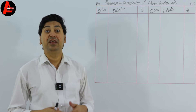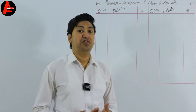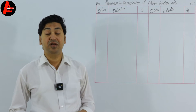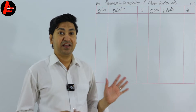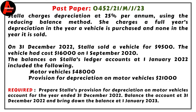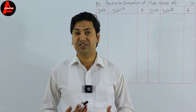We are applying the reducing balance method. For better understanding, we have taken a question from the 2023 RGCC accounting bus paper. Stella charges depreciation at 25% per annum using the reducing balance method. She charges a full year's depreciation in the year a vehicle is purchased and none in the year it is sold. On 31st December 2022, Stella sold a vehicle for $9,500; the vehicle had cost $16,000 on 1st September 2020.